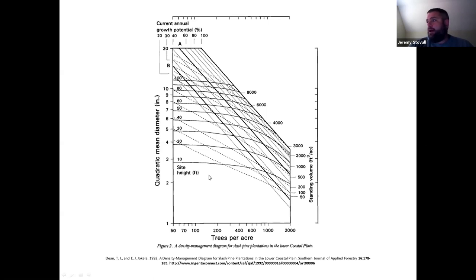These dotted lines that you see right here that my mouse is moving along right now, those dotted lines represent the standing volume in cubic feet per acre. We're not going to use those today, so you can disregard the dotted lines.